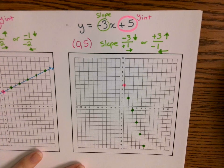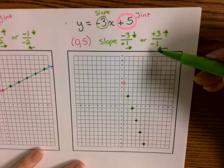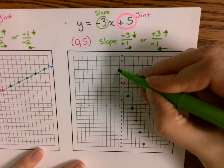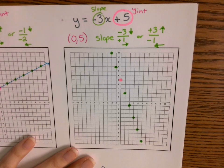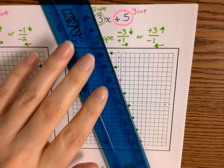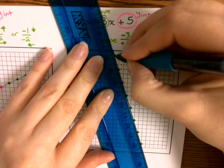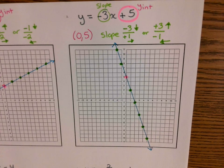I can't go any further down, but I can still go up — up three and then to the left one. Up three, left one takes me to (-1, 8). Up three, left one takes me to (-2, 11). And then that's all I can graph, so I connect them together. Are there any questions? Raise your hand if you need me to do another example. If everybody's okay, I'm going to pause the recording.